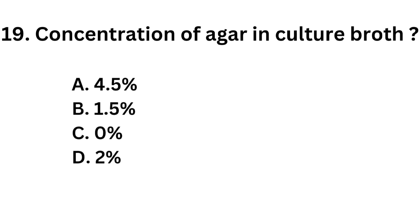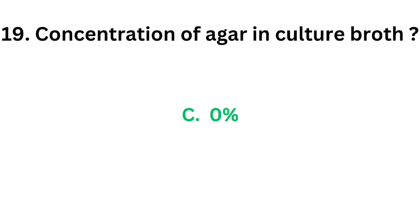Question number 19. Concentration of agar in culture broth. Option A: 4.5%. Option B: 1.5%. Option C: 0%. Option D: 2%. The correct answer is Option C, 0%. There is no agar in broth culture.